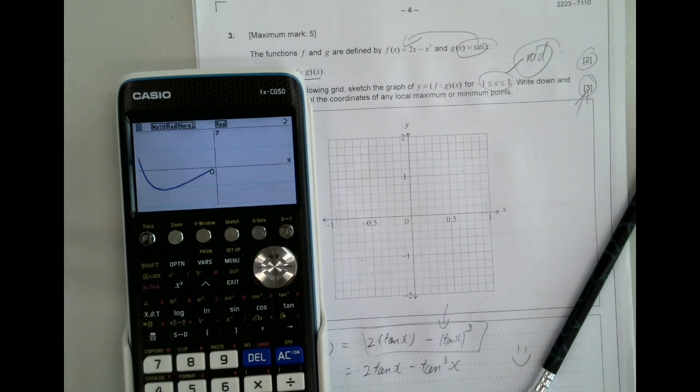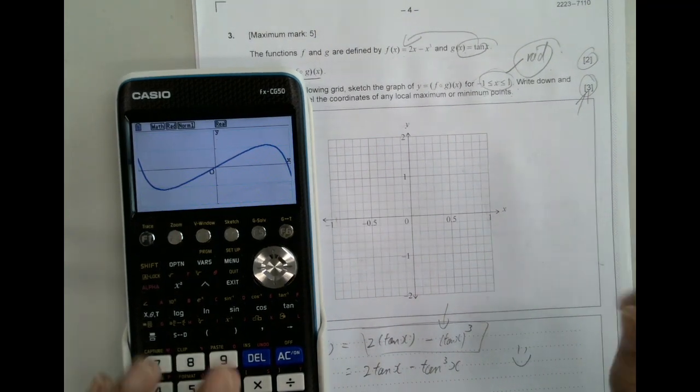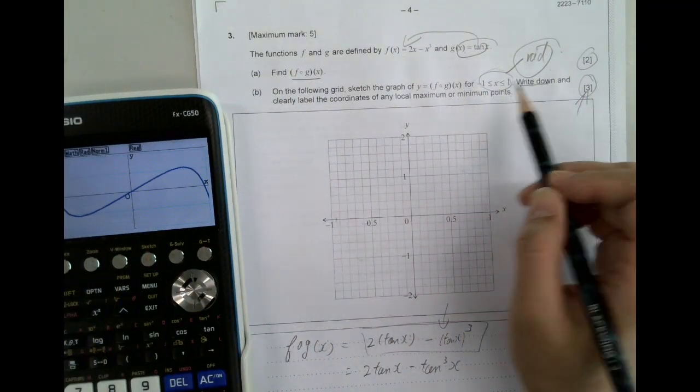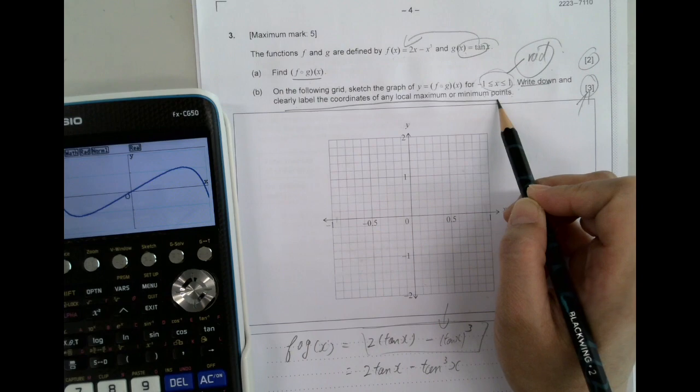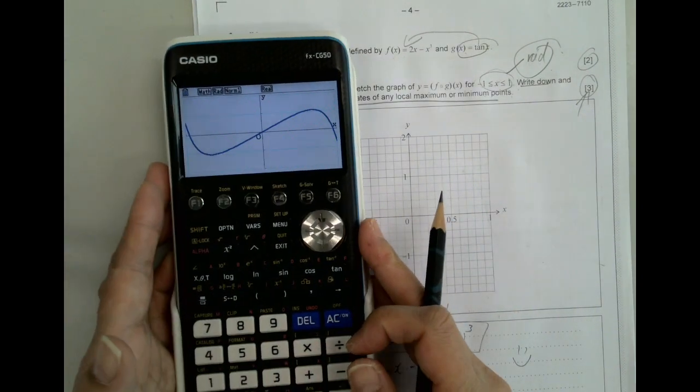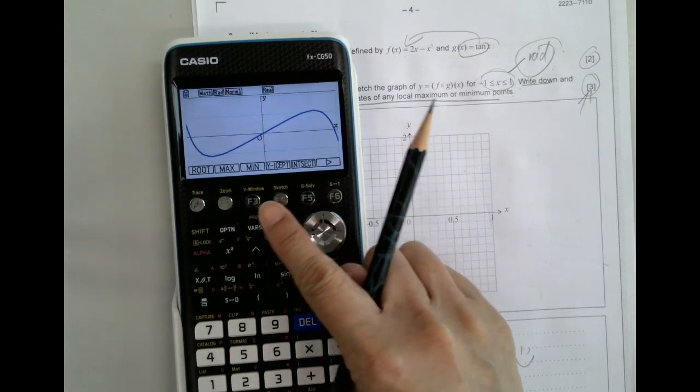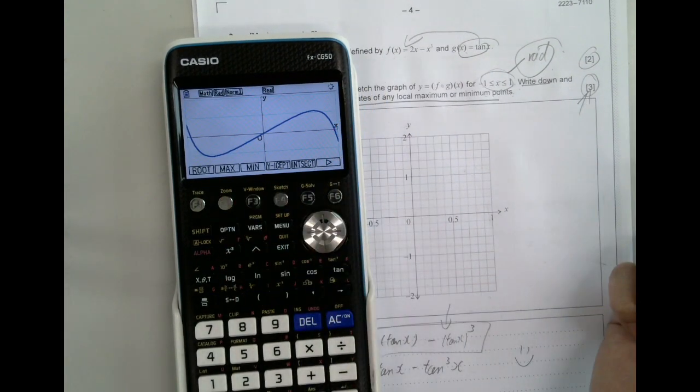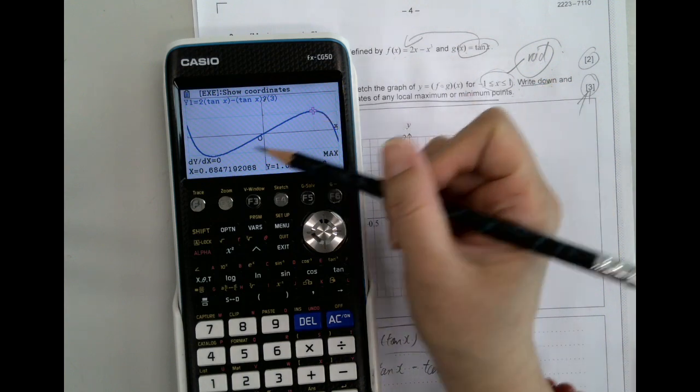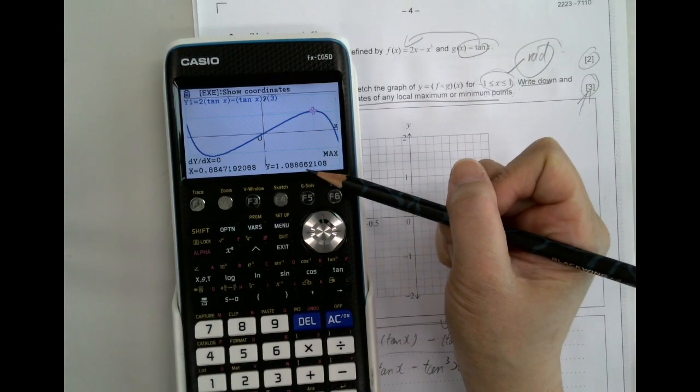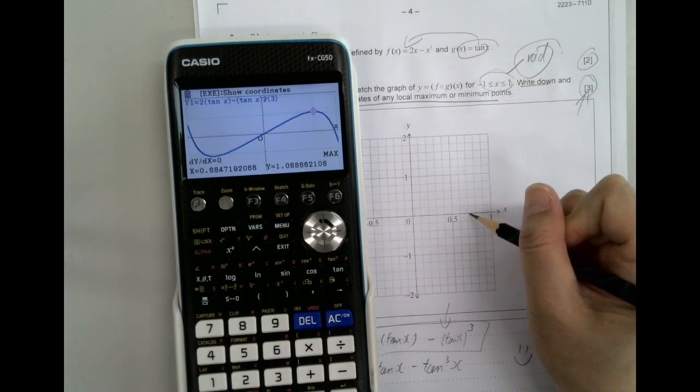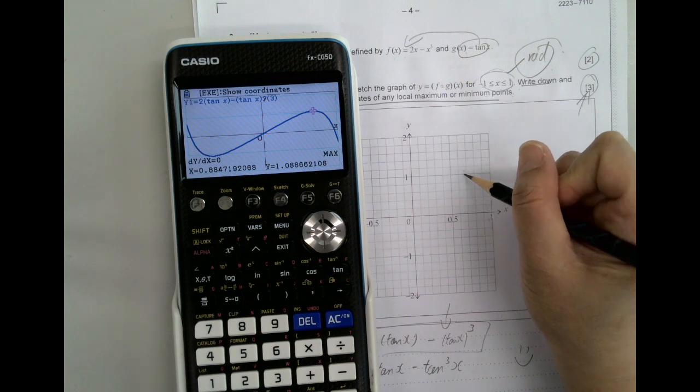Now our graph looks perfect. Back to the question: write down and label the coordinate of the maximum minimum. So we need to find the maximum and minimum from there. What we do is G-solve, maximum first. So this is our maximum point and this is the coordinate. So we keep, find that around here, six.